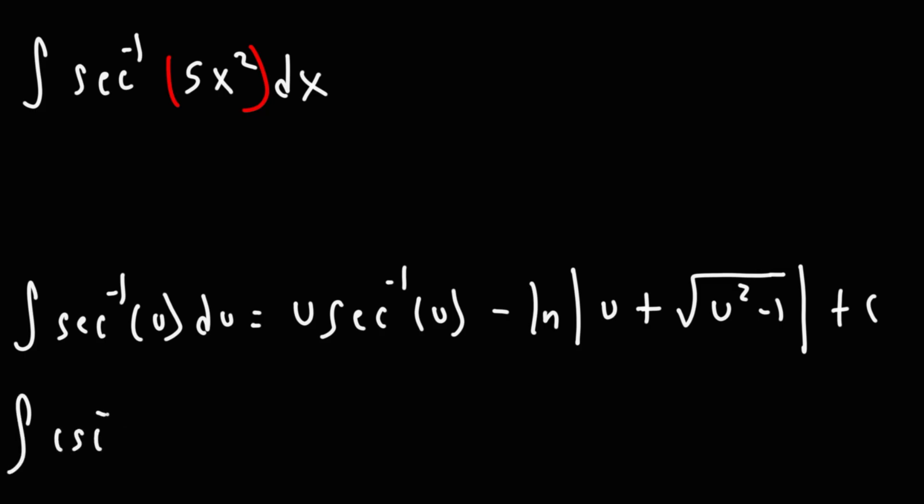Now, for arc cosecant, for those of you who want to know, it's going to be u arc cosecant u, and then instead of minus, we're going to have a plus, natural log, and then the stuff on the inside is going to be the same, u plus the square root of u squared minus 1, and then plus c.